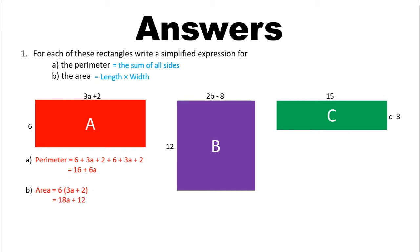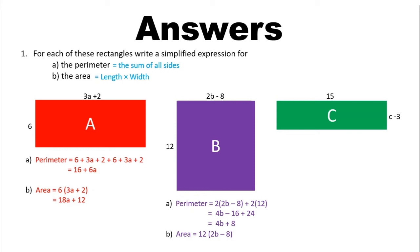For question b, the perimeter is the sum of all the outer sides. Notice that two of the sides are the same and the other two sides are the same. So I've done 2 times (2b minus 8) plus 2 times 12. That gives 4b minus 16 plus 24. Simplifying by grouping like terms, negative 16 and 24 together make 8, so this is 4b plus 8. For the area, length times width: 12 times (2b minus 8). Expanding out: 12 times 2b gives 24b, and 12 times negative 8 gives negative 96. So that's 24b minus 96.